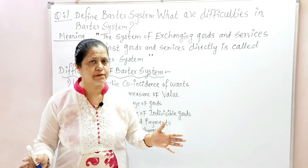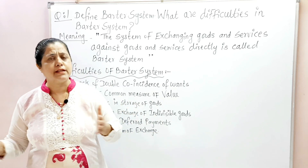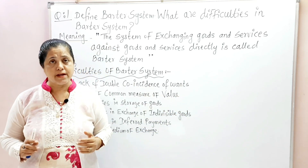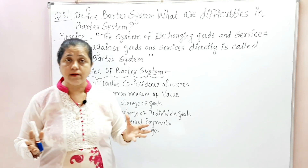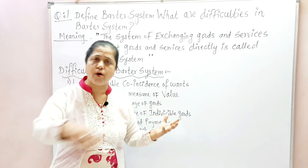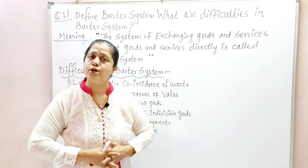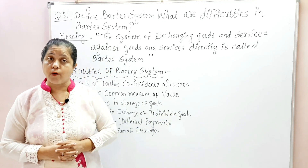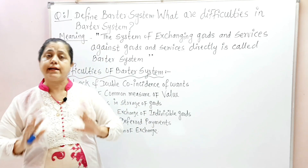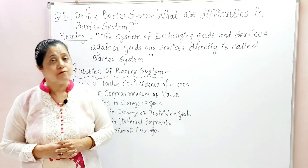When money was not present in our economy, at that time our economy was very simple. 90% of our population was staying in backward and rural areas, and all persons were totally busy in agriculture and ancillary activities related to rural areas. Our economy was so simple, wants were simple and limited, and it was very easy to satisfy our wants.